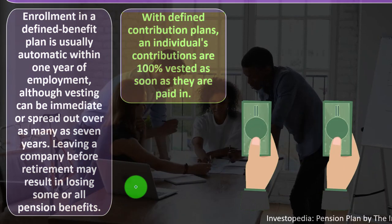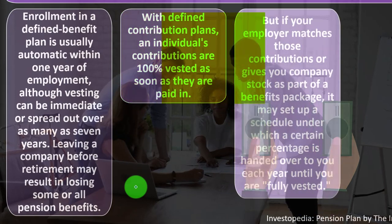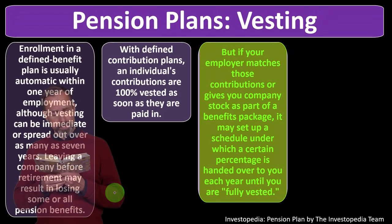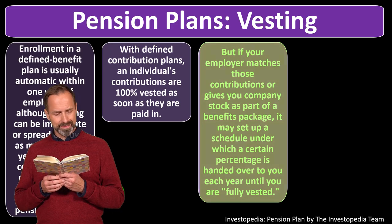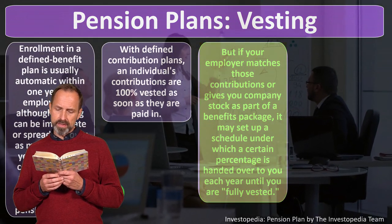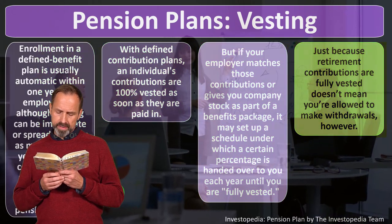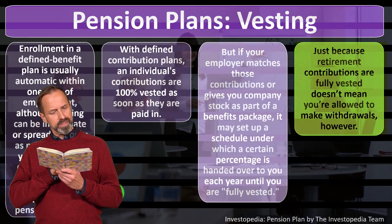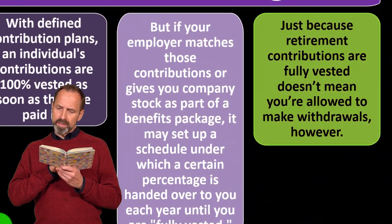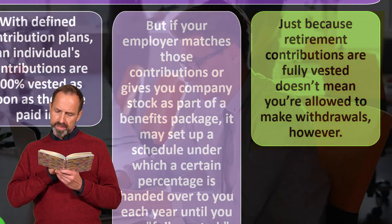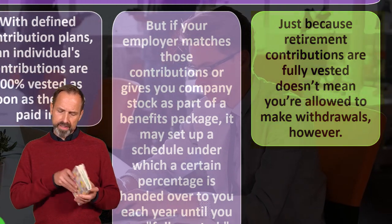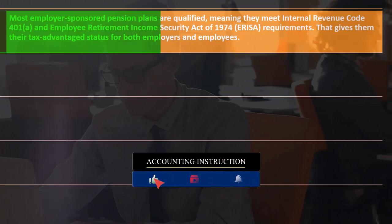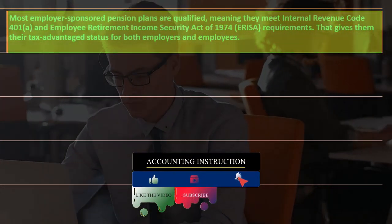With defined contribution plans, individual contributions are 100% vested as soon as they are paid in. However, if your employer matches contributions or gives company stock, they may set a schedule where a certain percentage is handed over each year until fully vested. Being fully vested doesn't mean you're allowed to make withdrawals — the funds are under a retirement plan with restrictions, since you're typically receiving tax benefits from those contributions.